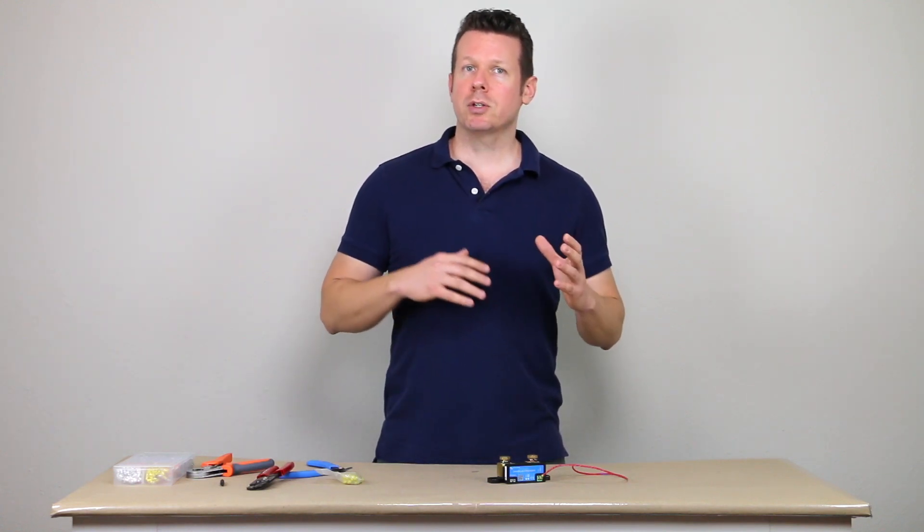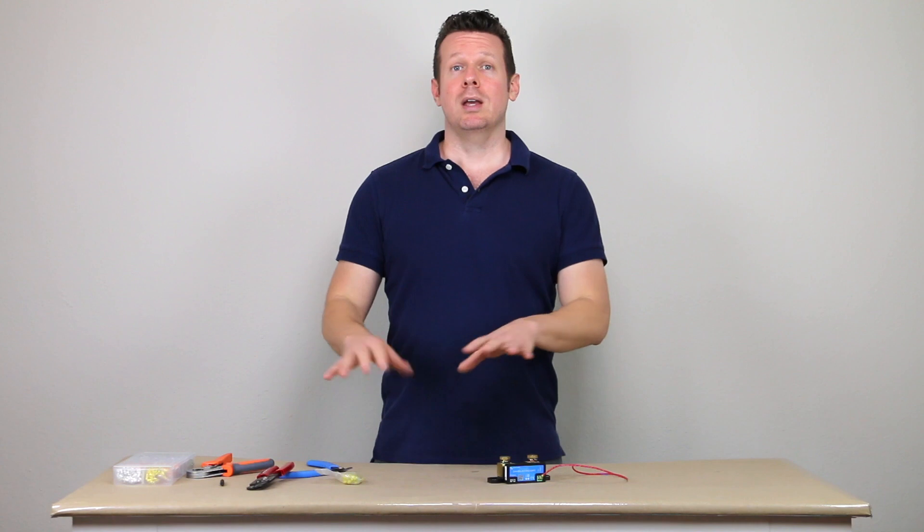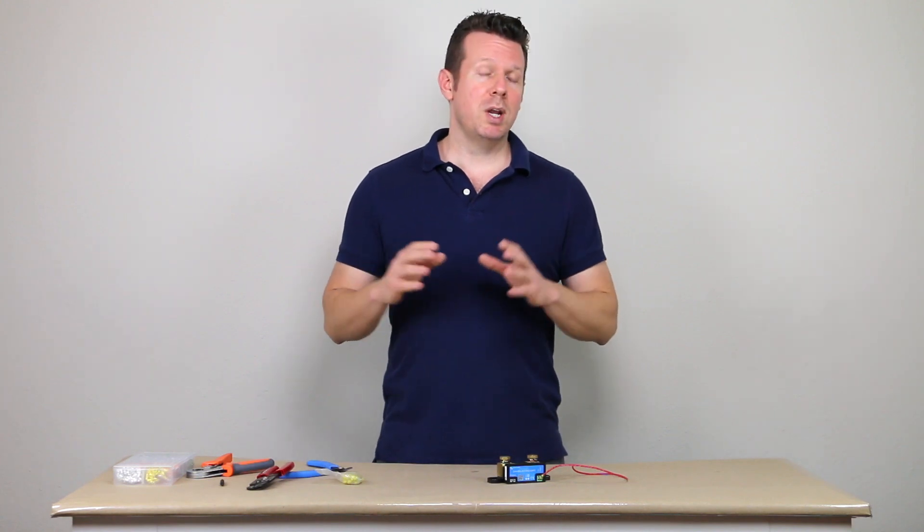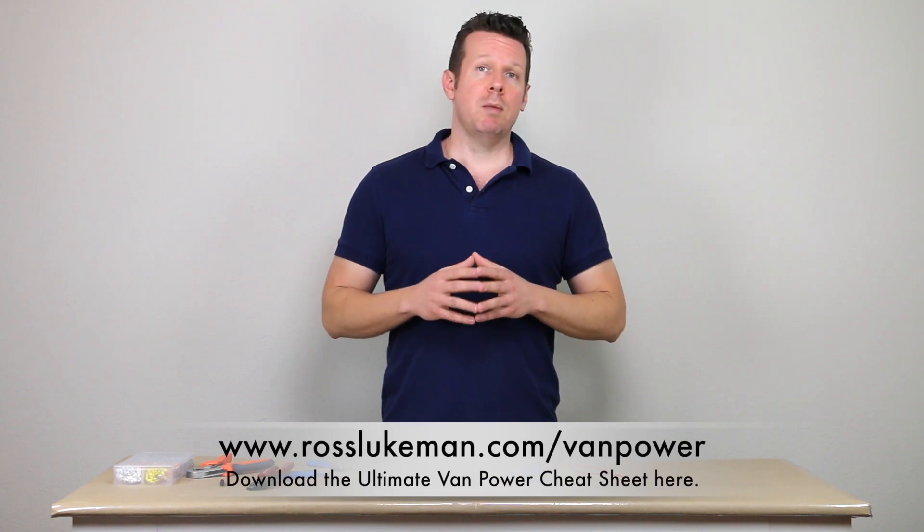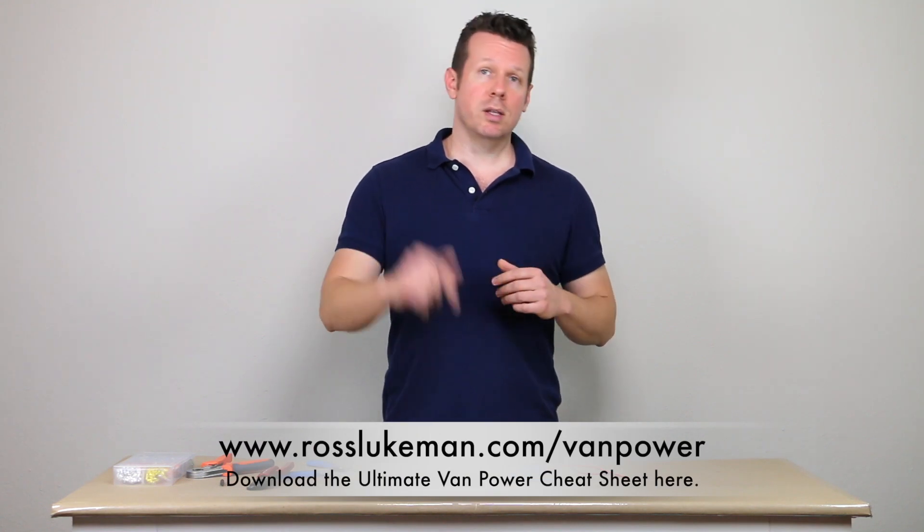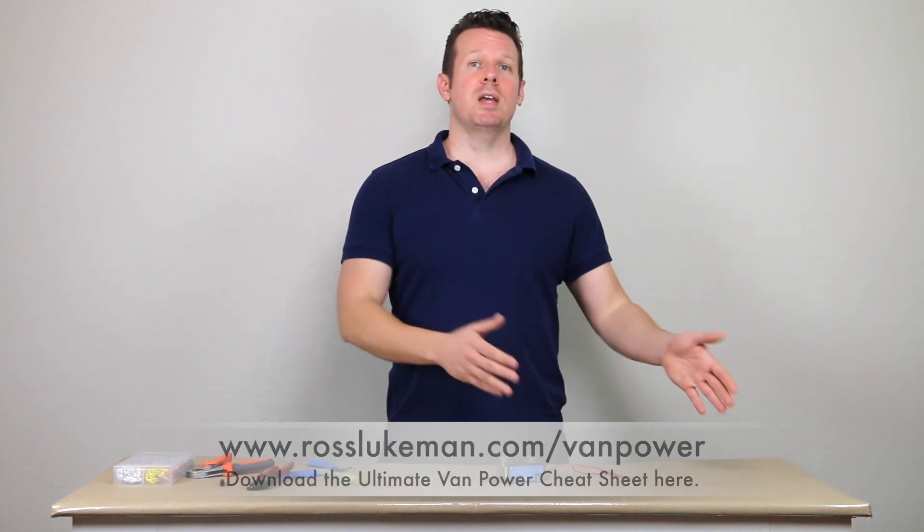And how do you get this solar power to play nice with the alternator power and the shore power? How do they all come together to charge those batteries and get distributed? So it's a really illuminating diagram that I think you'll find helpful. If you want your own copy of the Ultimate Van Power Cheat Sheet, all you have to do is click that link below or go to rossluchman.com slash van power.